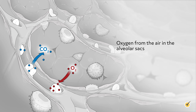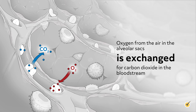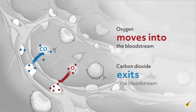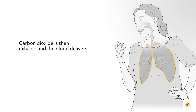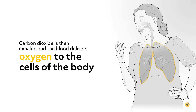Oxygen from the air in the alveolar sacs is exchanged for carbon dioxide in the bloodstream at the alveolar or pulmonary capillary wall. Oxygen moves into the bloodstream and carbon dioxide exits the bloodstream. Carbon dioxide is then exhaled, and the blood delivers oxygen to the cells of the body.